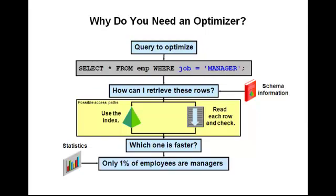Let's assume, in this example, only 1% of the rows satisfy the query's where clause. Now the optimizer can weigh the two possible plans and clearly decide to use the index in this case, because it will involve much less I/Os than running a full table scan.